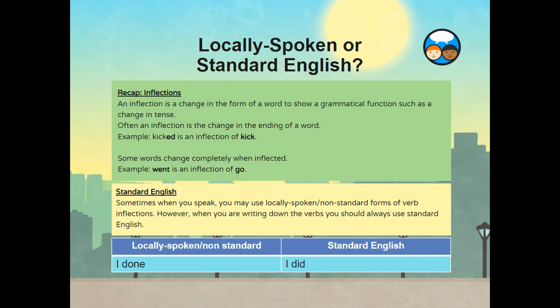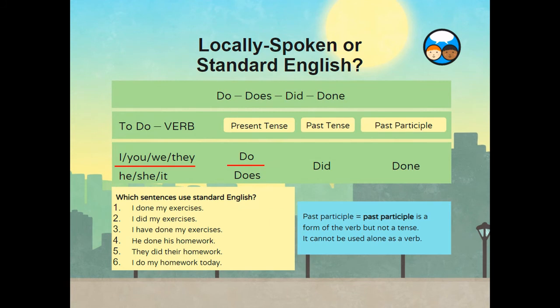Standard English. Sometimes when you speak, you may use locally spoken or non-standard forms of verb inflections. However, when you are writing down the verbs, you should always use standard English. 'I done' is an example of locally spoken or non-standard English, while 'I did' is an example of standard English. Do, does, did or done — the infinitive form of this verb is to do. I, you, we, they — do. He or she or it — does, in the present tense. In the past tense, the word do becomes did. And the past participle form of this verb is done.